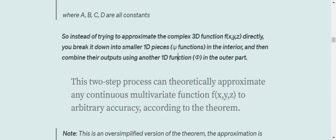This two-step process can theoretically approximate any continuous multivariate function to arbitrary accuracies according to the theorem. So I hope you would be able to get the gist of the theorem that any complex function can now be broken down into a combination of 1D functions.